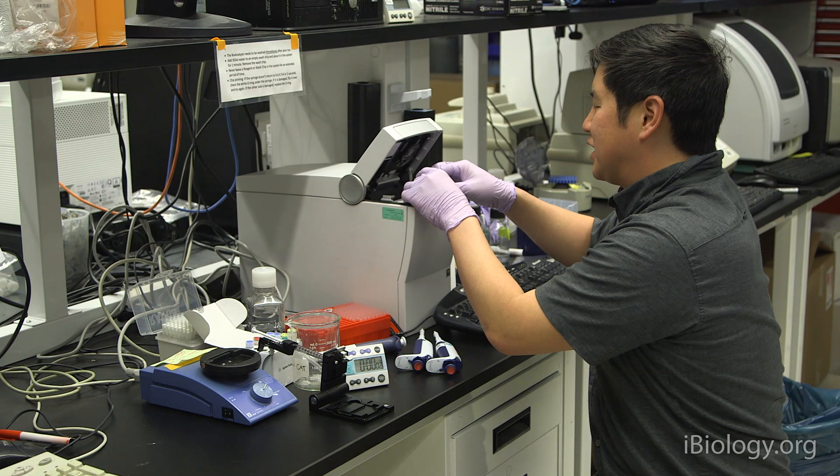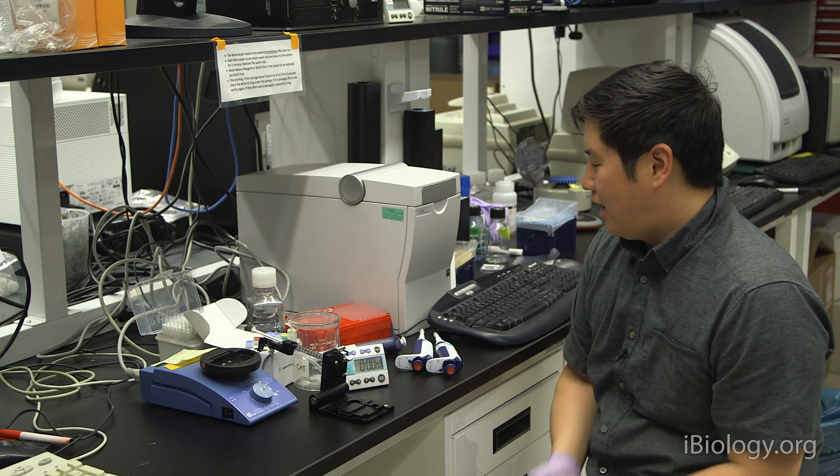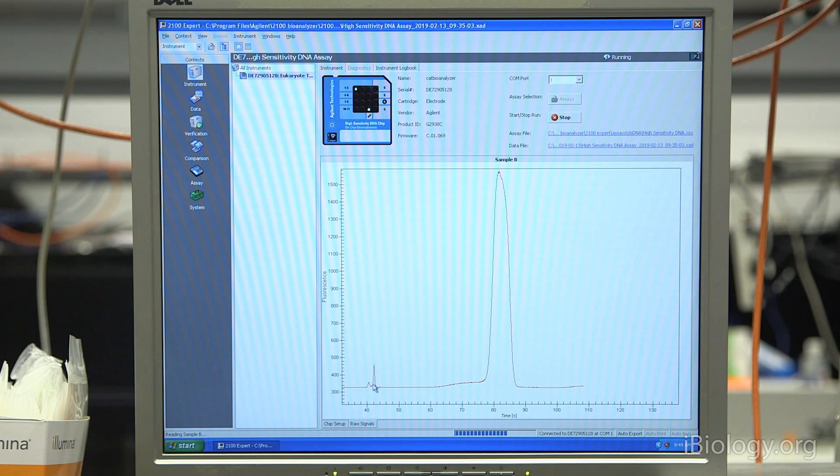Now the chip is prepared and ready to run. What we want to do is go ahead and place this into the bioanalyzer system, close the lid, and then once the system detects the chip, you'll be able to click on the Start button to begin the run. A run of a full chip will generally take about 45 minutes. It's a good idea to stick around for a few minutes until you see the ladder run, just to make sure the run has started okay before you take off.